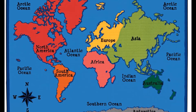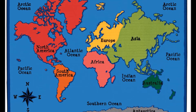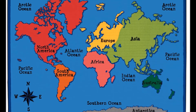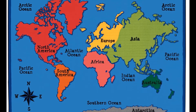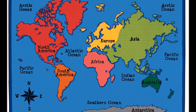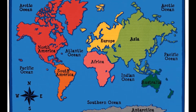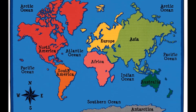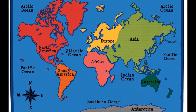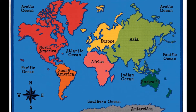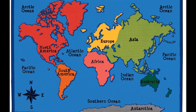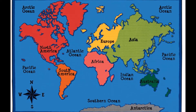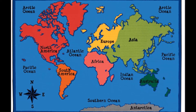One can find a graph of estimated human population from 10,000 BC to the projected population in 2100. From Common Era Year Zero to 1500, the world's population grew from 188.24 million people to 461.37 million people. That is a compound annual growth rate of just under six hundredths of a percent.